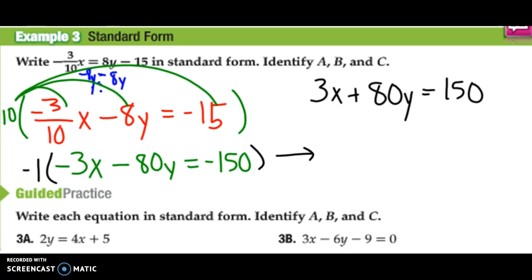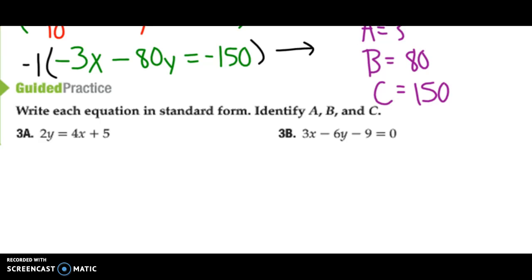Now it says to identify what A, B, and C are. What's A? A is 3. What's my B? B is 80. And C is 150. There's two guided practice problems you can try as well.